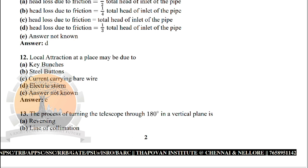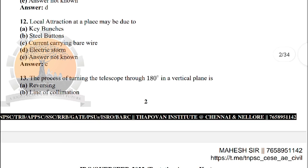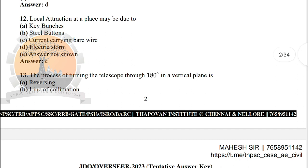Next: local attraction at a place may be due to — the correct answer is option C: current-carrying bare wire.